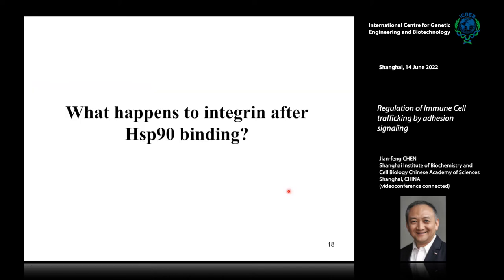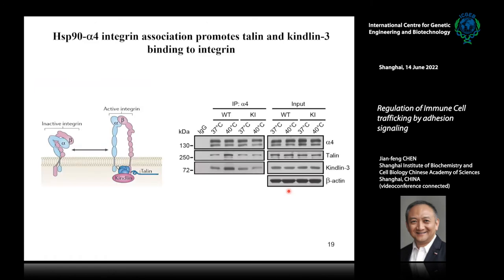What happens to the integrin after Hsp90 binding? We first studied the binding of talin and kindlin-3 to integrins, since these binding events are critical steps for integrin activation. The 40-degree treatment can significantly enhance binding of both talin and kindlin-3 to the alpha-4 tail. But for the knock-in mice, there is no such increased talin and kindlin-3 binding, meaning there is no activation of alpha-4 integrins.